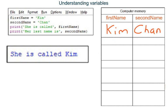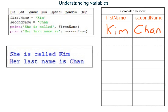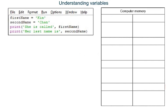Line 4 outputs the string her last name is and then looks up what is stored in variable second name and outputs what it finds. Notice how lines 3 and 4 use a comma to allow us to have two things inside the brackets after the instruction print — a string followed by a comma followed by the contents of a variable. The program has now finished running so the variables and everything in them are deleted.